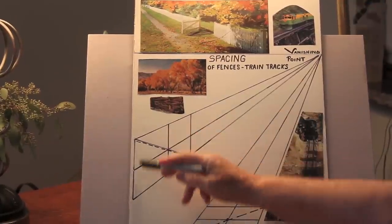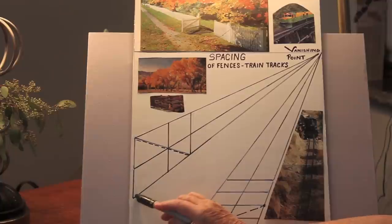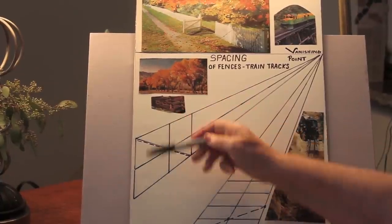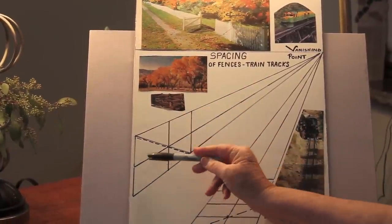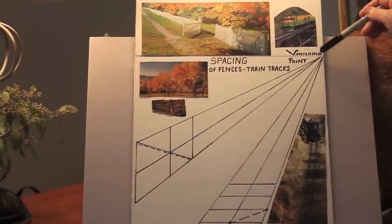If the bottom of the first fence is here, then you draw your second line from the vanishing point. Now measure between these two points and then make your third line that comes up to the vanishing point.